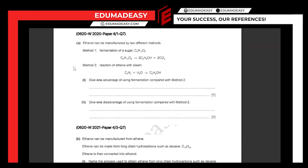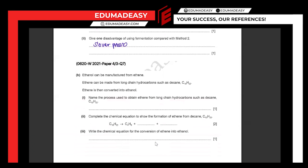Ethanol can be manufactured by two different methods: fermentation of sugar, or the reaction of ethene with steam. Give one advantage of using fermentation compared with method two: it is more sustainable and renewable, because ethene is a hydrocarbon obtained by cracking petroleum, which is not renewable. So the advantage is that sugar is a renewable source. Give one disadvantage of using fermentation: it is a much slower process.